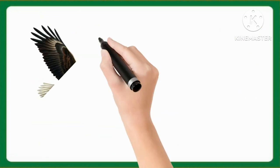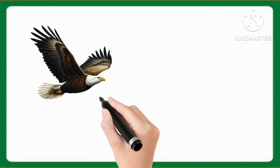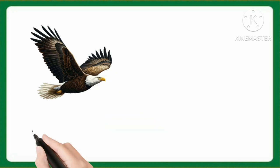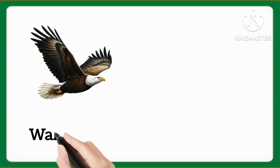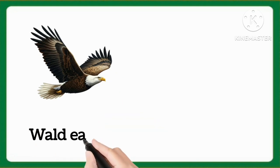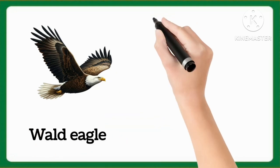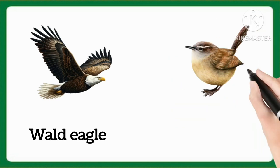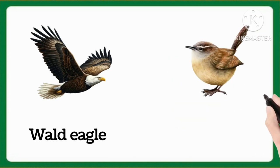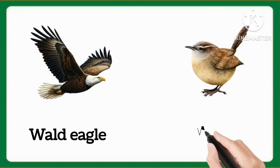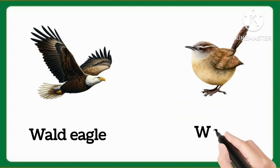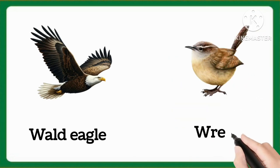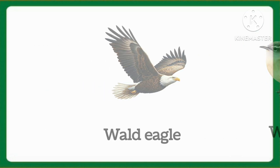And now tell me which word is this, kids? This is wald eagle. Wald eagle. And now tell me which word is this, kids? This is ren. Ren.